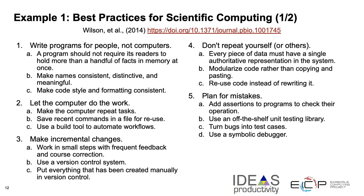Our first example is a paper written by Greg Wilson and others in 2014 called Best Practices for Scientific Computing. First of all, write programs for people, not computers. Use code style and formatting and be consistent with them. Let the computer do the work — you can take repeated tasks and put them in scripts and then save those for using again. Also, you can use a build tool that automates workflows. Make your changes incremental.